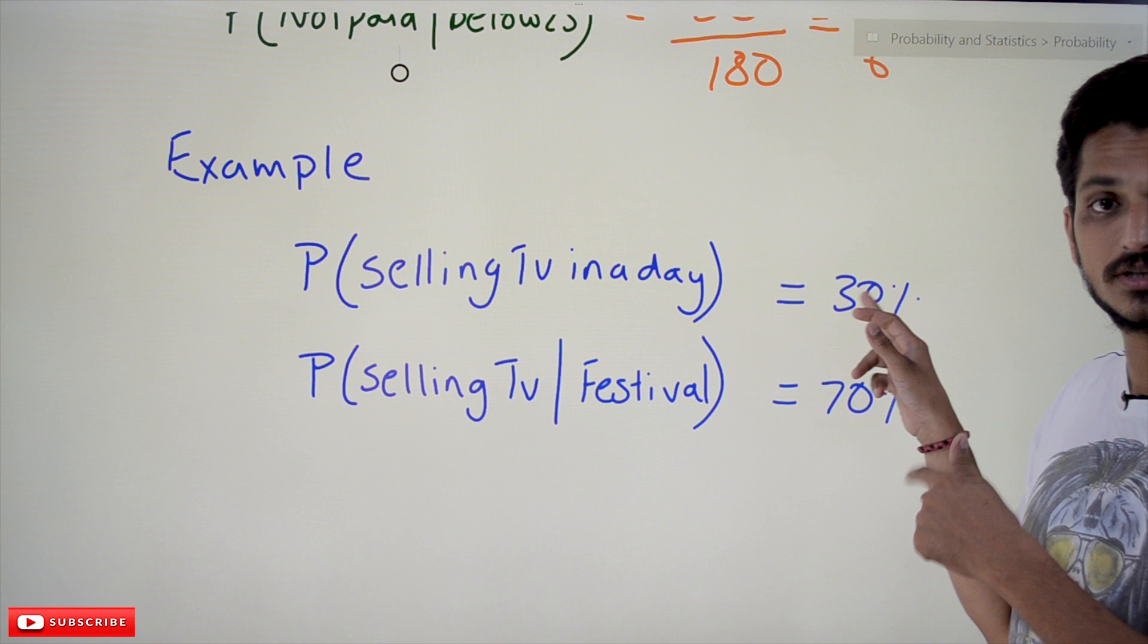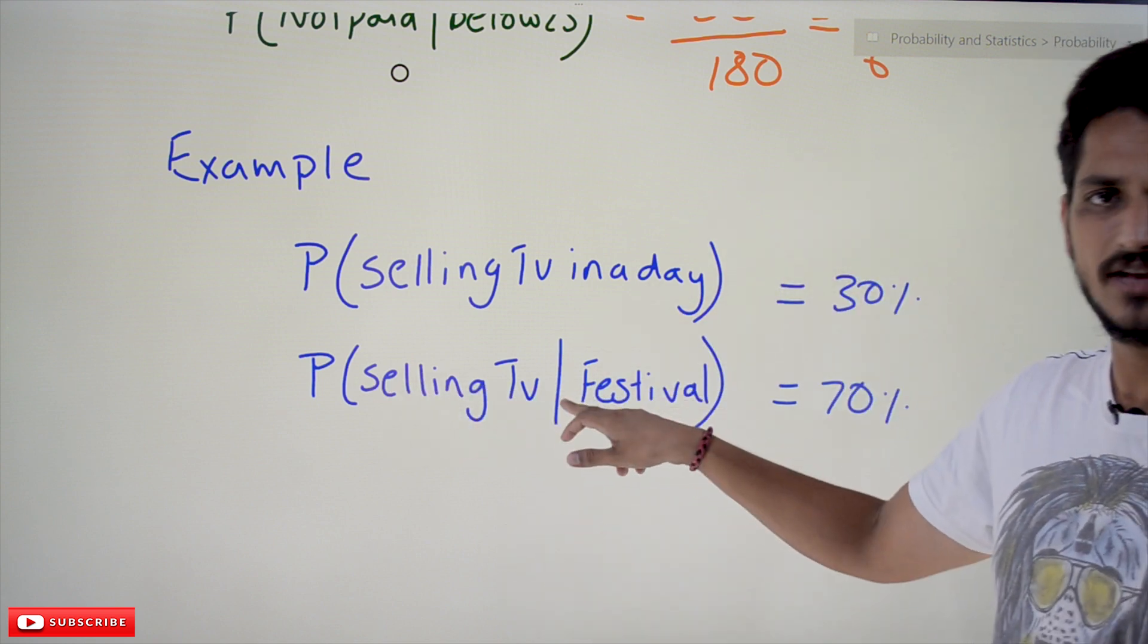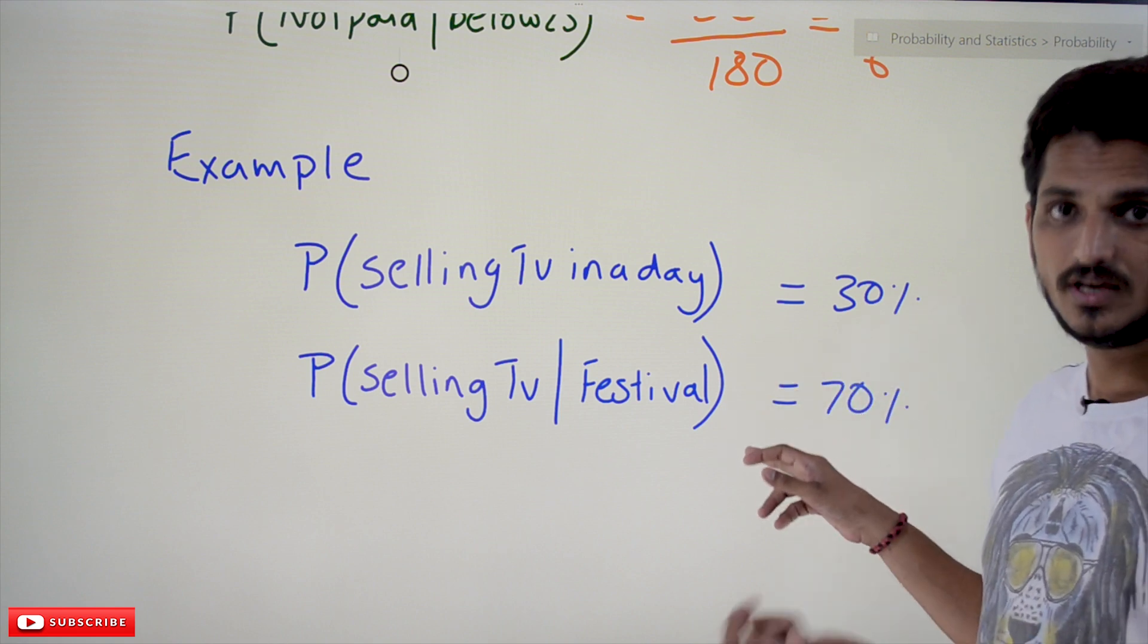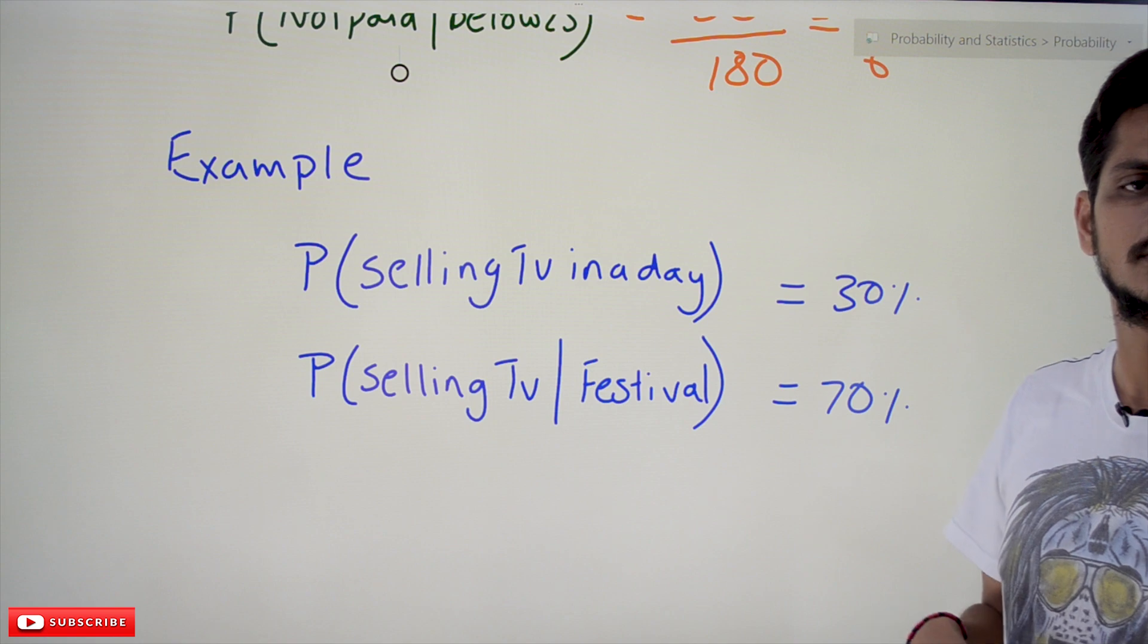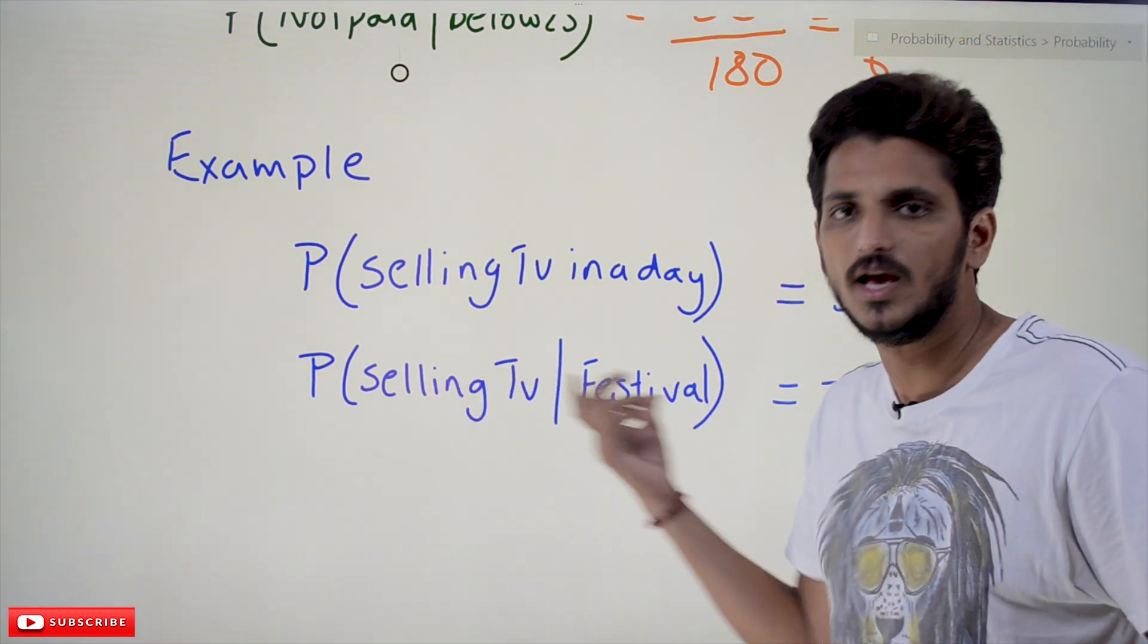Probability of selling TV in a day - it was given as 30%. How we got this 30%? From the previous history. Probability of selling TV if it is a festival - it shows that 70%. It is going to sell TV in festival days. So in order to make you understand how conditional probability helps.